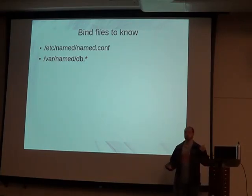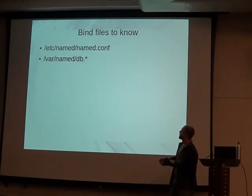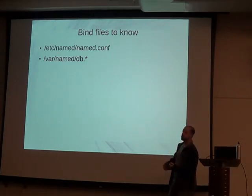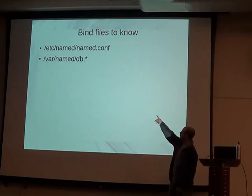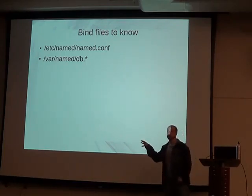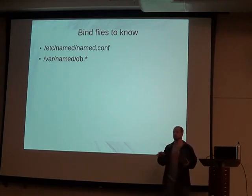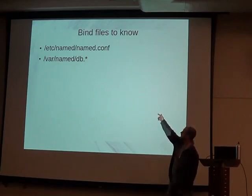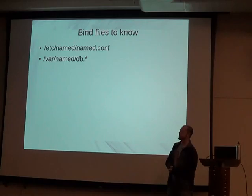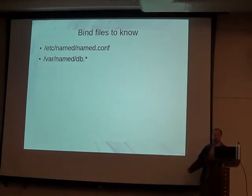BIND files to know — here's what's great about BIND: it's so simple. You essentially have two files to care about. You have the named.conf file, which is your main config file that specifies how to set up your DNS server and where all the options are. And then you have the /var/named/db.something files — the .something is a name you make up. You mention that db file in named.conf so you know what it does and what its purpose is.